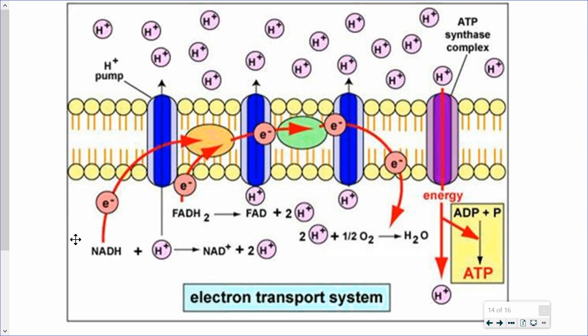Hello, everyone. This is the third of three lessons on cellular respiration. The first two were on glycolysis and the Krebs cycle. This one will be on oxidative phosphorylation.